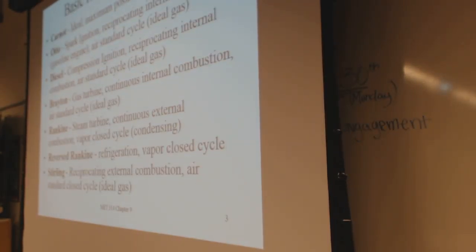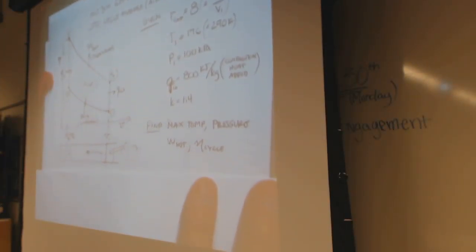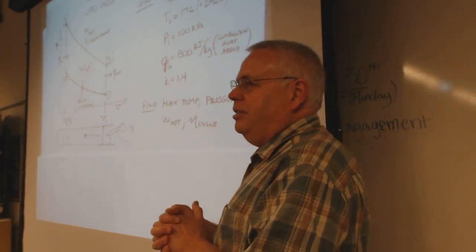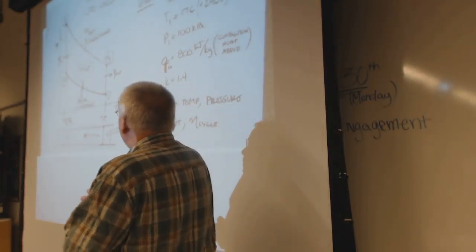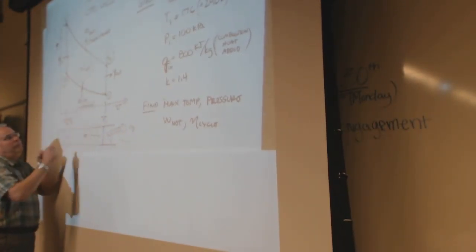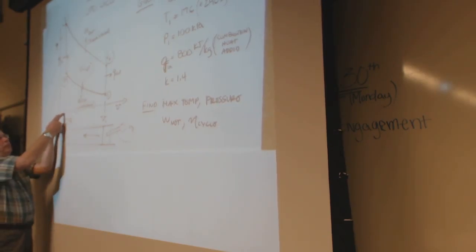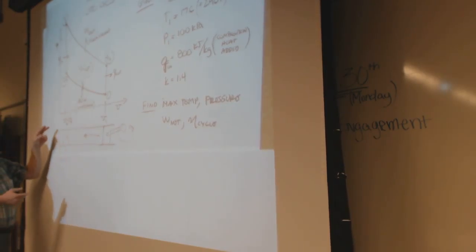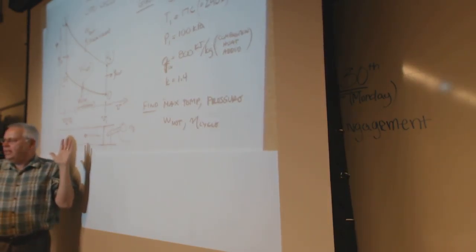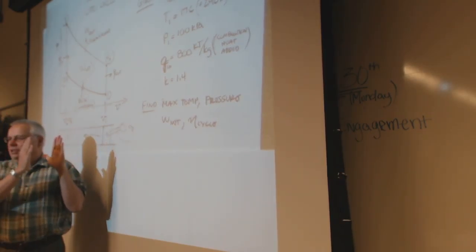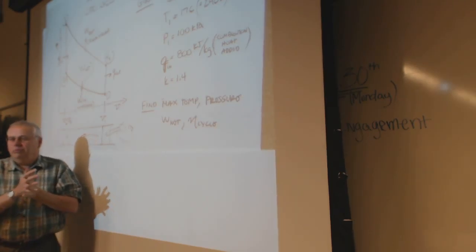Let's go through the Otto cycle example. This will go by faster than you can copy it down, so apologies, but we will have it posted. For the Otto cycle, we had a compression ratio which is volume-related. It goes from the original volume, and a compression ratio of 8-to-1 means the compressed volume is one-eighth of the original. This causes pressure to rise, but it isn't eight times the pressure — it's one-eighth of the volume.